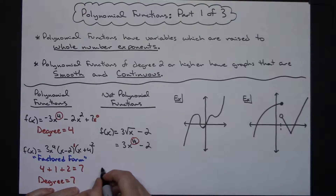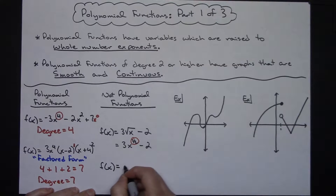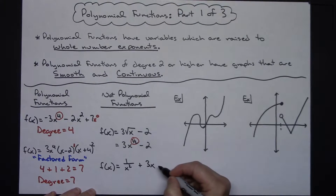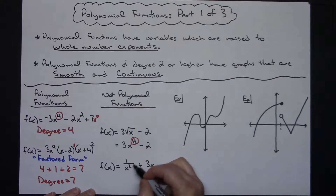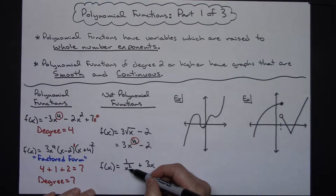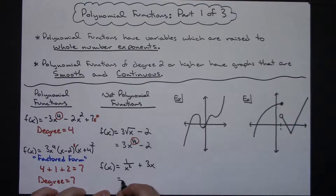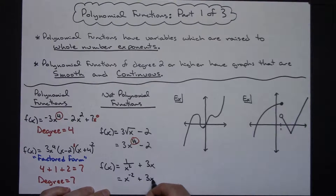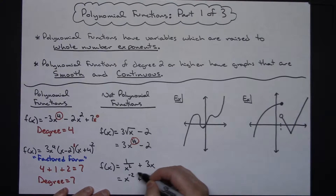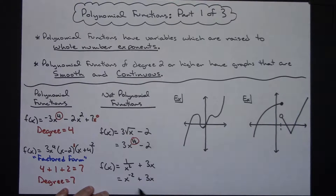Let's do another one — maybe f(x) equals 1 over x squared plus 3x. The exponent on 3x is just 1, so that's fine. But for the 1 over x squared, using laws of exponents I move x squared to the top, which makes the exponent negative. So I can rewrite this as x to the negative 2 plus 3x. The negative 2 is a negative integer — it's got to be a whole number, meaning a positive integer. So this is also not a polynomial function.